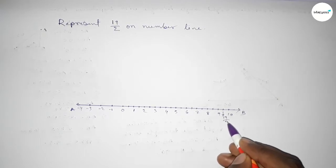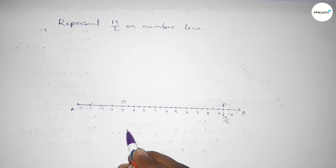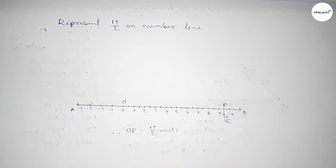So this is 19 over 2 on number line. Taking O and P, so therefore OP equal to 19 over 2 on number line. That's all, thanks for watching. If this video is helpful to you, then please share it with your friends.